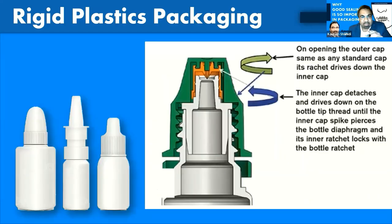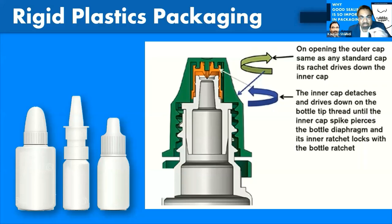When we talk about rigid plastic packaging for pharmaceuticals, it becomes more critical because pharmaceutical packaging plays a very important role in terms of dosing and ensuring the consumer or patient gets the right material with the right quantity. Again, precise geometrical dimensions and details of both cap and bottle are essential. Sometimes it is more than two pieces, so each and every piece of the closing system must be very precise.